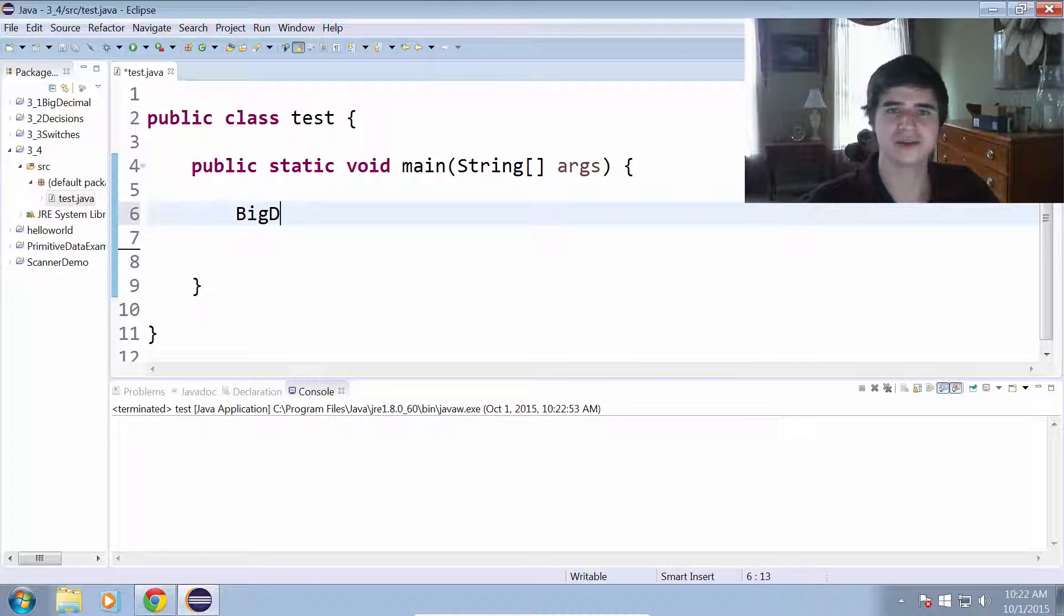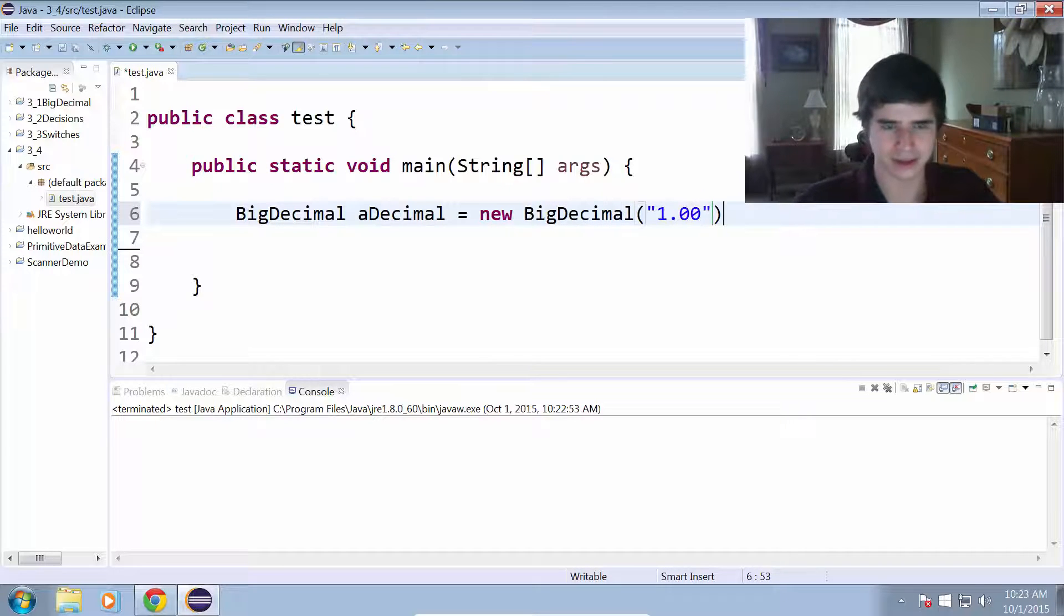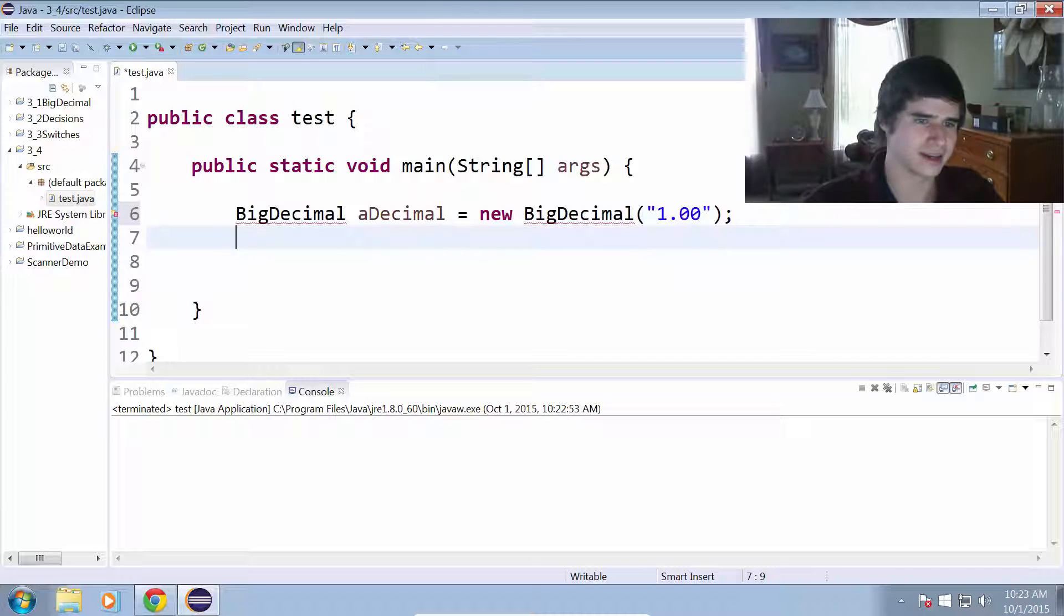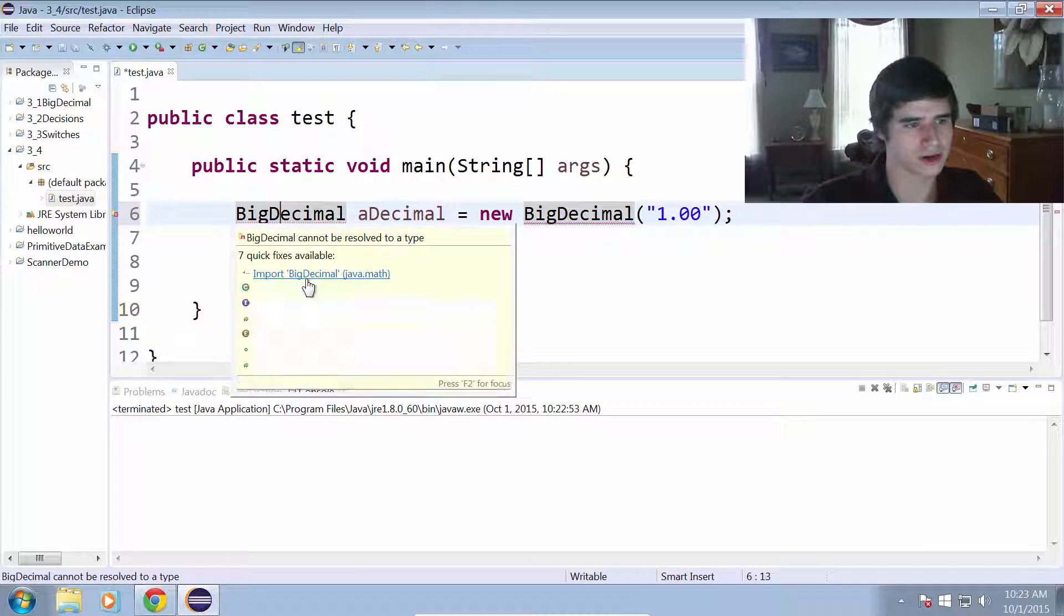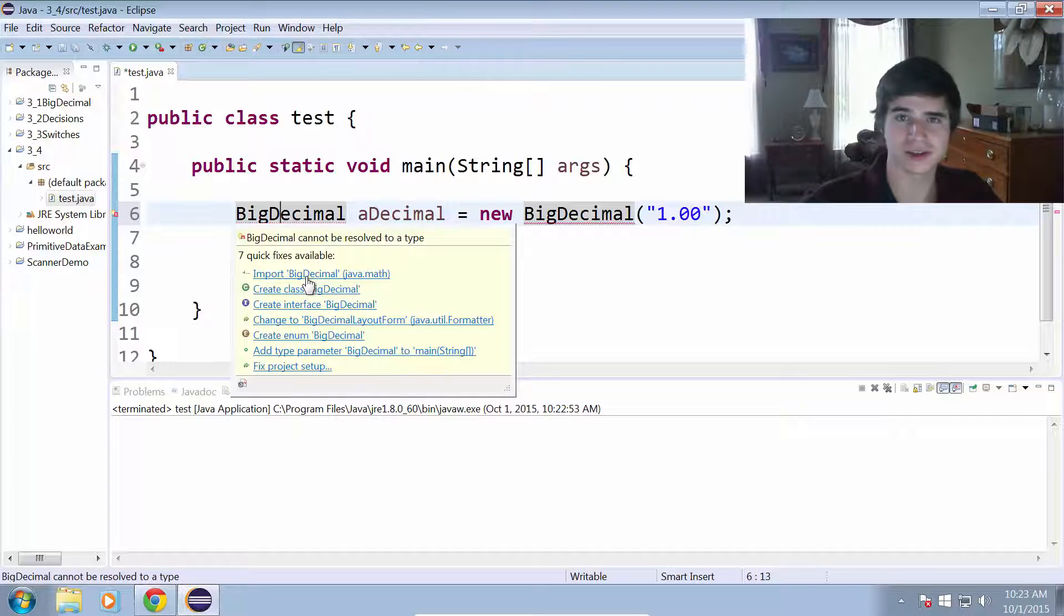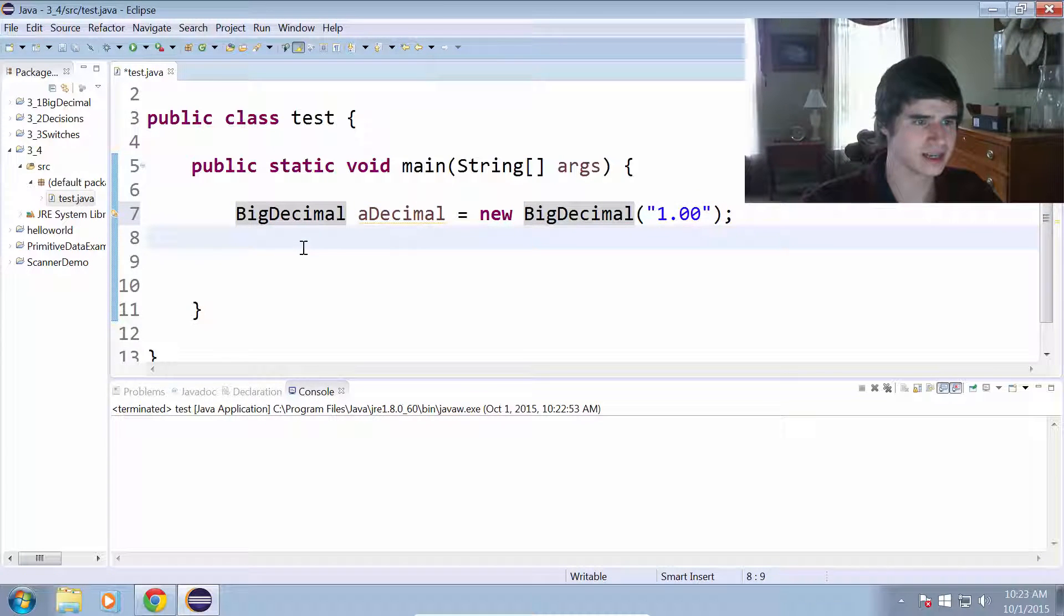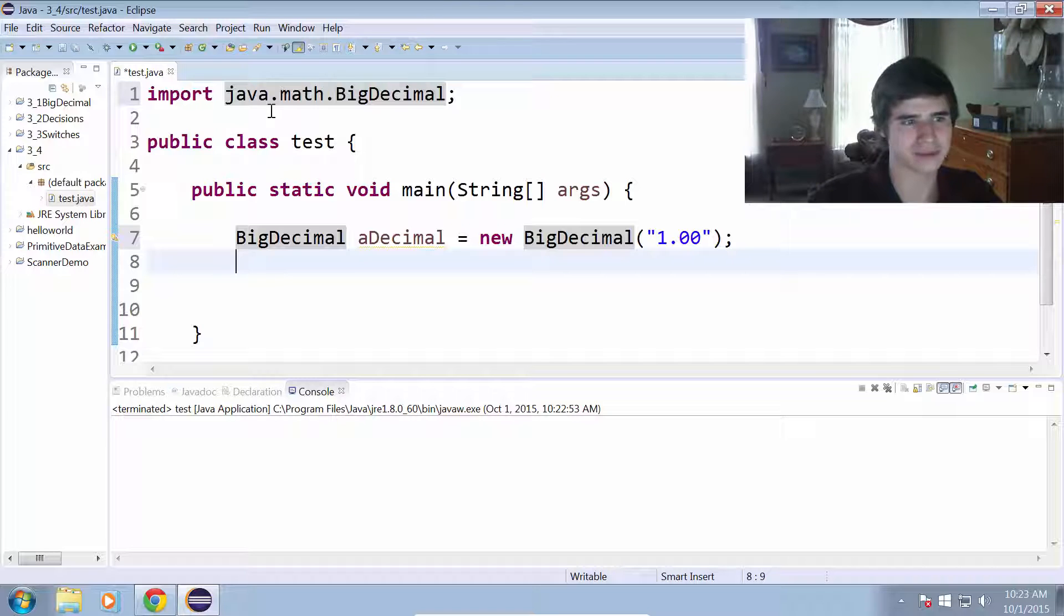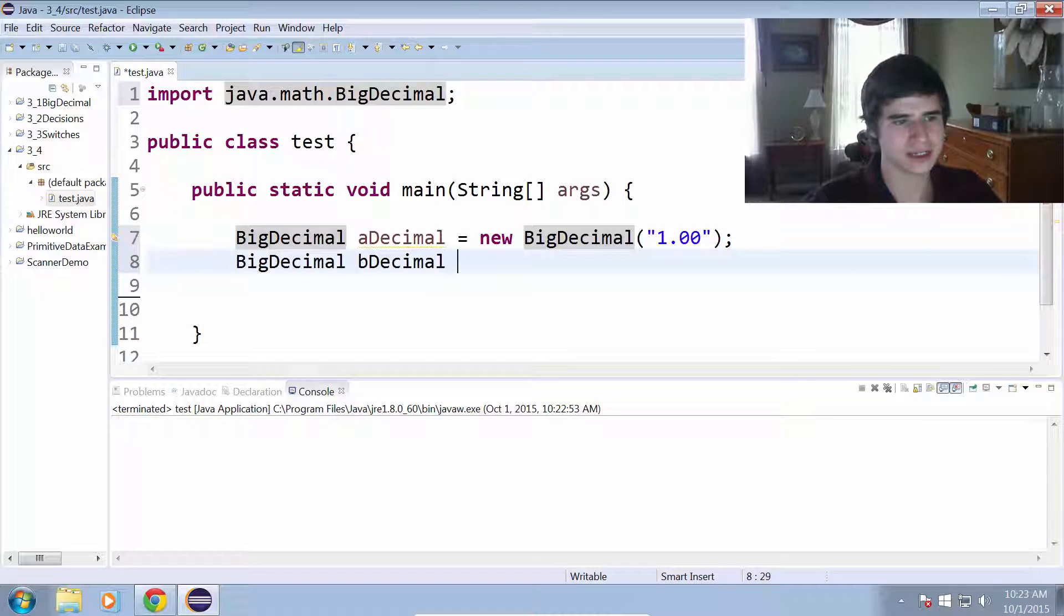So let's create two BigDecimals. BigDecimal aDecimal equals new BigDecimal, and we will give that a value of 1. Now I need to import the BigDecimal into our program. So I'm going to use the Eclipse quick fix and do that. So now we have import java.math.BigDecimal up there. And I'll create my second BigDecimal, bDecimal equals new BigDecimal, and we'll also give this a value of 1.